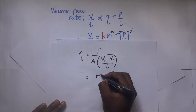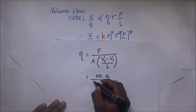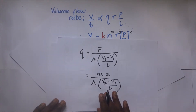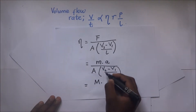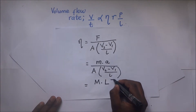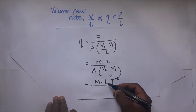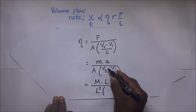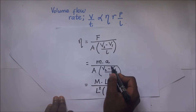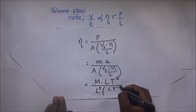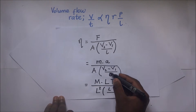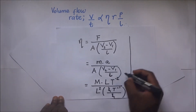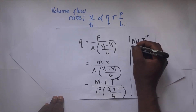Force is mass times acceleration divided by cross-sectional area, times the velocity gradient (V2 minus V1) over L. The dimensions of mass are M, acceleration is L·T⁻², area is L², and velocity over length gives L·T⁻¹ divided by L.